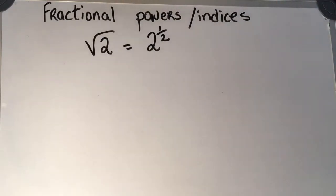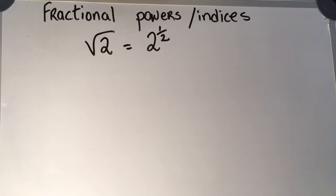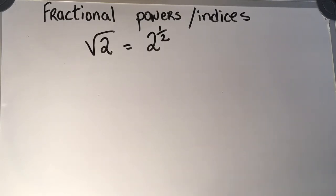The square root of 2 is equal to 2 to the power of 1 half. Let's see if this is true. If it's true, when I square both sides, I should get exactly the same answer.